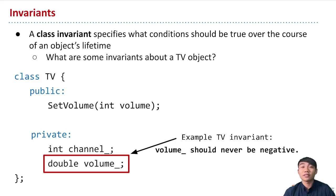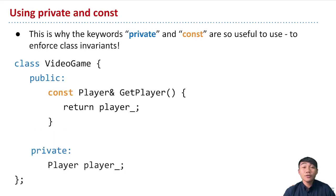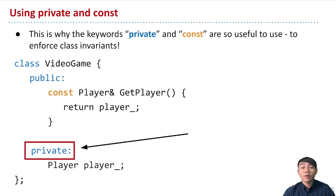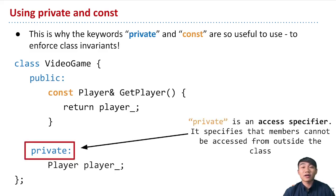So how do we actually enforce these invariants in our code? There are two keywords that are really helpful in making sure that the state of instances of our class always satisfies our class invariants. The first helpful keyword is the private keyword. Private is an access specifier, and within the section of our class marked private, we usually put our member variables because we want to hide them from the outside world. Private prevents anyone outside of the class from accessing or changing the member variables to a value that would break the class invariants we define.